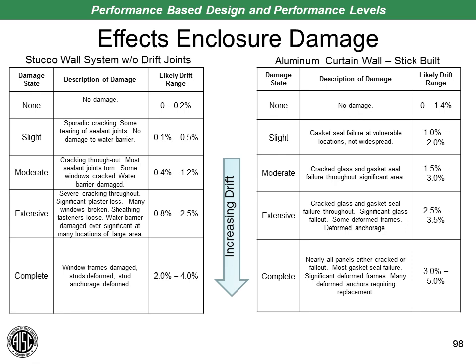Let's look at anticipated amounts of damage at various percent lateral drifts for two different facade types: a stucco wall system on the left and an aluminum glass curtain wall on the right. For the relatively fragile and brittle stucco wall system, you get fairly substantial damage at roughly one percent drift — moderate to extensive damage. Whereas a glass curtain wall system can probably undergo one to two percent drift with only slight damage, such as gasket failures, without the glass falling out of the glazing system. Thinking about what type of cladding you have is therefore critical when setting performance objectives.